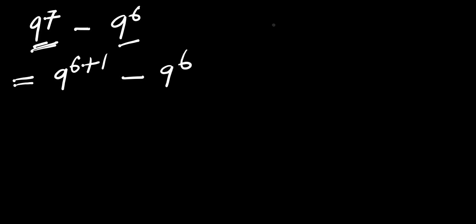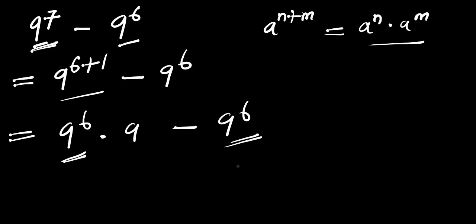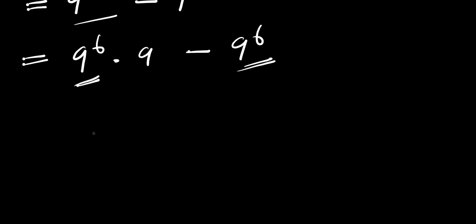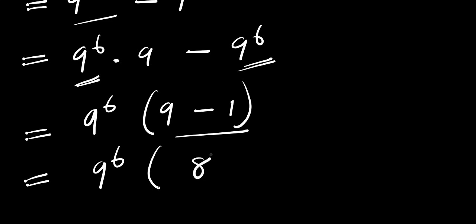We make use of the identity a power n plus m equals a power n times a power m. Applying this identity, we are now going to have 9 power 6 times 9, minus 9 power 6. We have 9 power 6 in both terms, so we can factor that out, giving us 9 power 6 times (9 minus 1), which is 8.